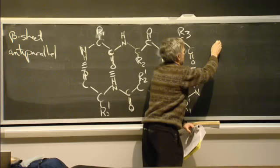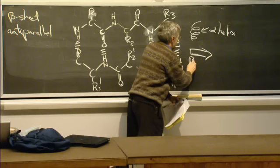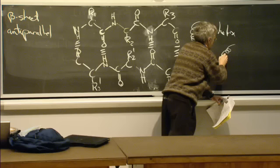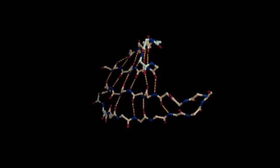An alpha helix is represented as a ribbon spiral, and a beta sheet is written as an arrow. Most proteins tend to have structures consisting of, for example, an alpha helix, some kind of turn, maybe a beta sheet, another turn, another beta sheet, and maybe an alpha helix — some combination of regions of secondary structure.